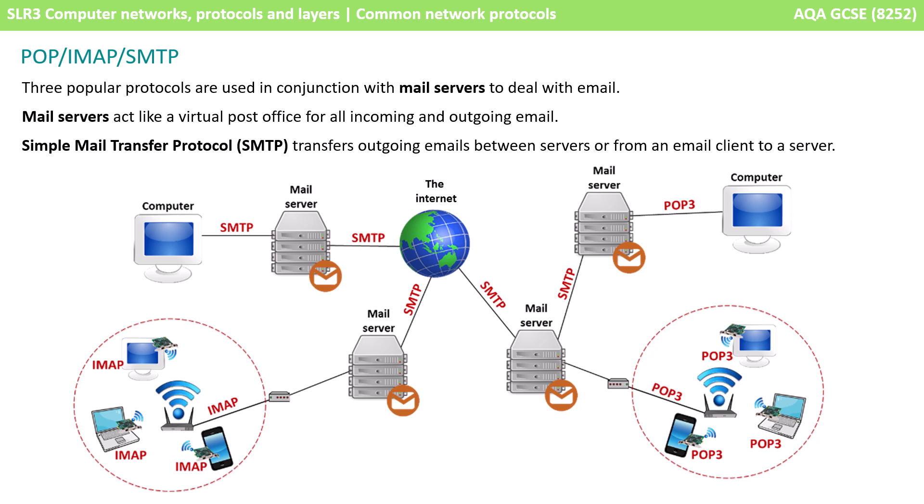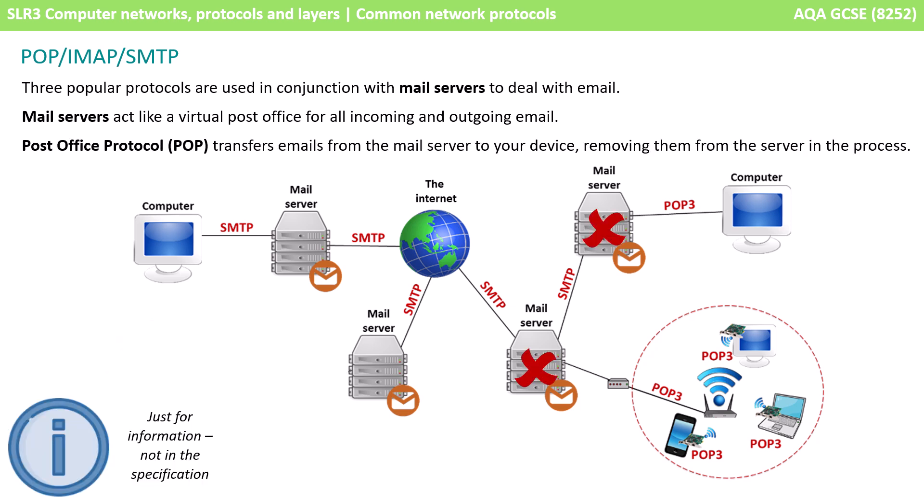POP, IMAP, and SMTP are three protocols used in conjunction with mail servers to deal with email. Mail servers act like a virtual post office for all incoming and outgoing mail. The Simple Mail Transfer Protocol SMTP transfers outgoing emails between servers, or from an email client to a server. The Post Office Protocol POP transfers emails from the mail server to your device, removing them from the server in the process.